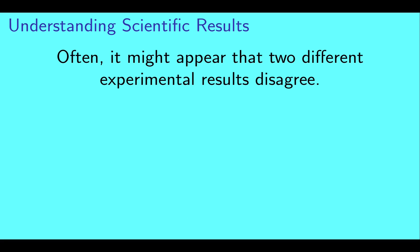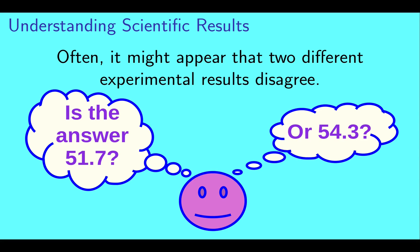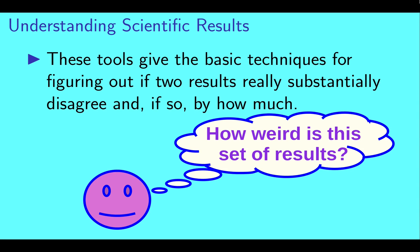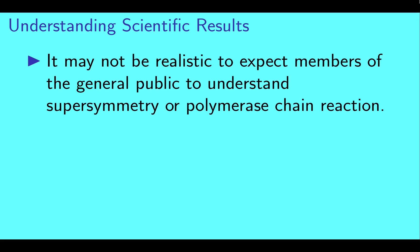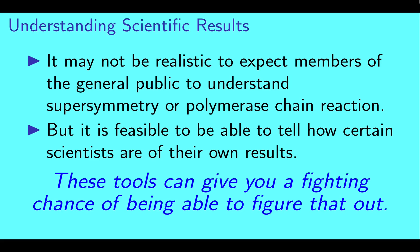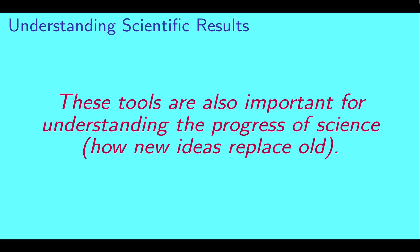Also, often it might appear that two different experimental results disagree, but experimental results have error bars. The tools discussed on this channel give the basic techniques for figuring out if two results really substantially disagree and if so, by how much. So it might not be realistic to expect the general public to understand supersymmetry or polymerase chain reaction, but it is feasible to be able to tell how certain scientists are of their own results. These tools can give you a fighting chance of being able to figure that out.